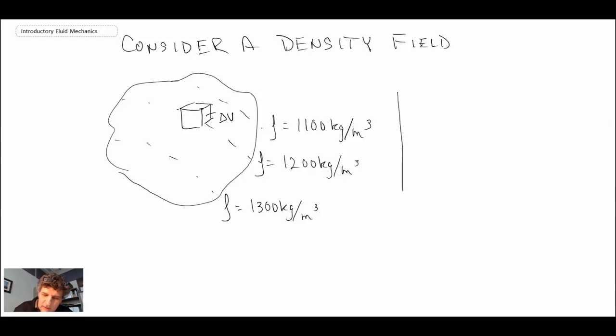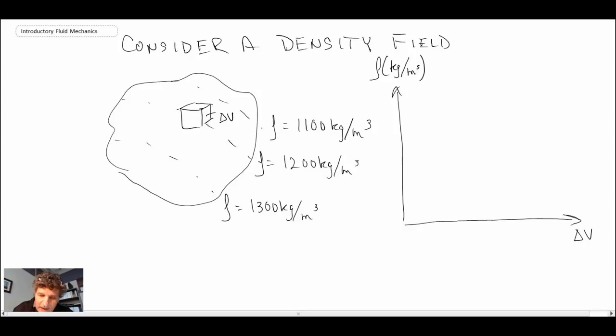Now, if we were to plot density as a function of delta V, and so I'll do that over here on the side. So we have rho kilograms per meter cubed, and then delta V down here. If we were to plot that, what we would find is that when delta V is really, really small, below our 10 to the minus 9 millimeters cubed, the density values are going to be fluctuating all over.